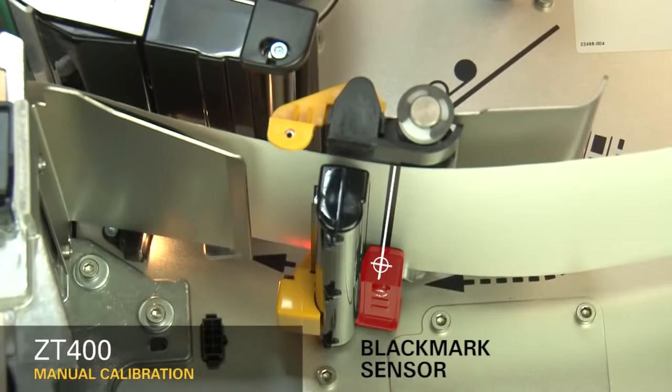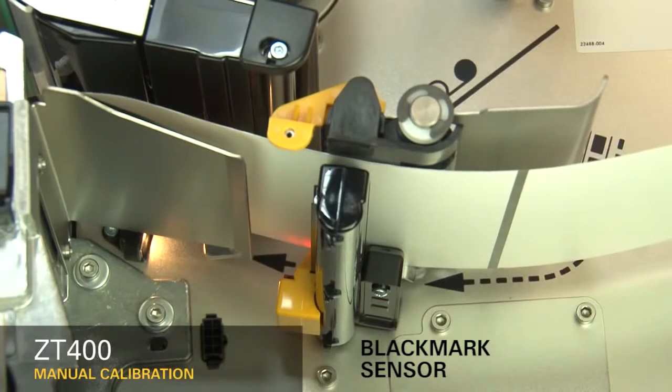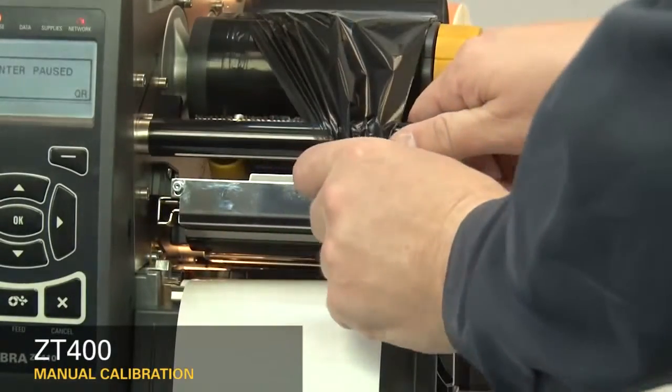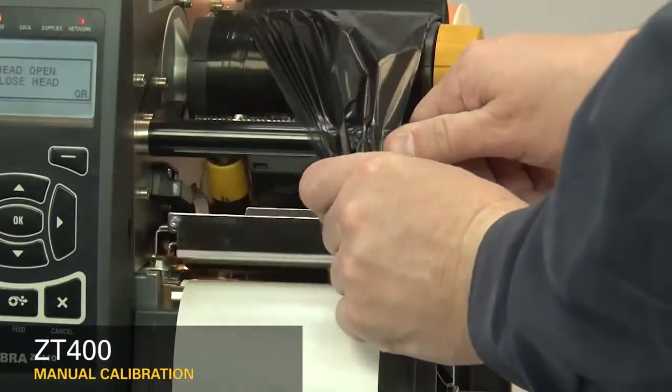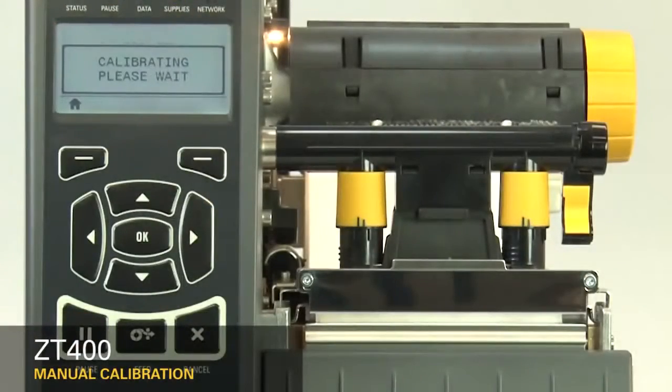If your media has a black mark on the underside of the media, please ensure the black mark is not under the mark sensor. If you're using ribbon, the ribbon must be removed from the ribbon sensor location on the inboard side of the printer. Close the printhead. When you've completed these steps, press the pause button to continue.